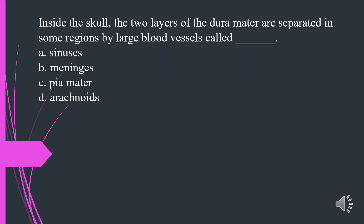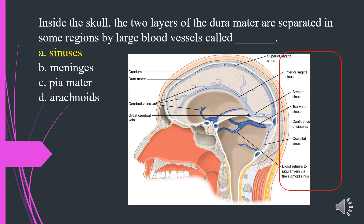Inside the skull, the two layers of the dura mater are separated in some regions by large blood vessels called what? A. Sinuses. B. Meninges. C. Pia mater. D. Arachnoids. The answer is A. Sinuses.